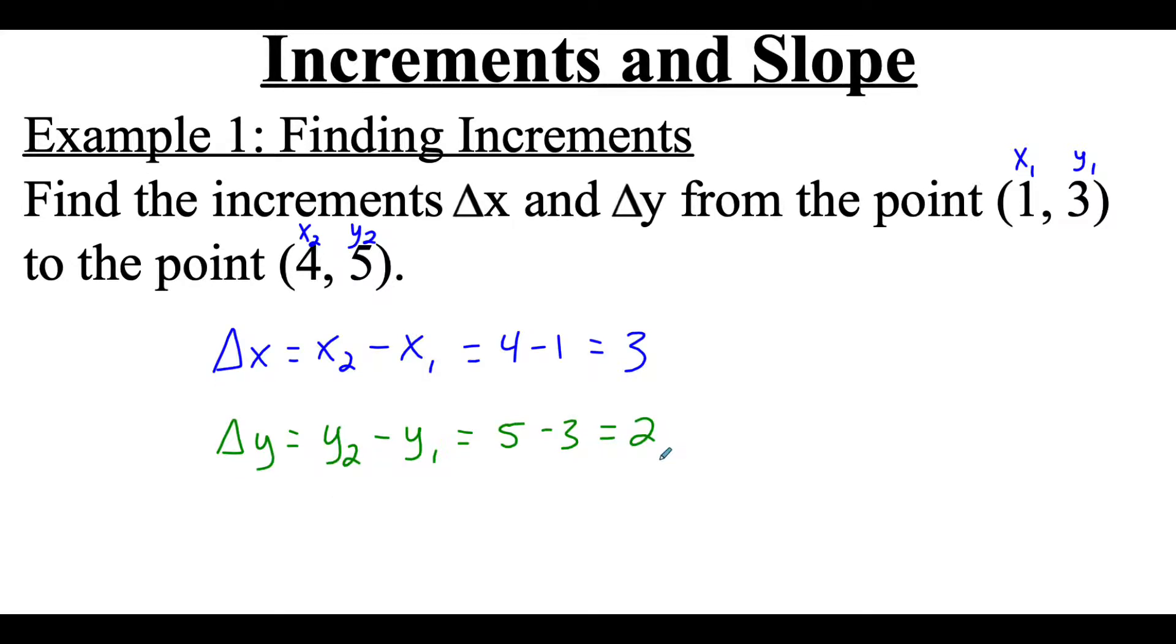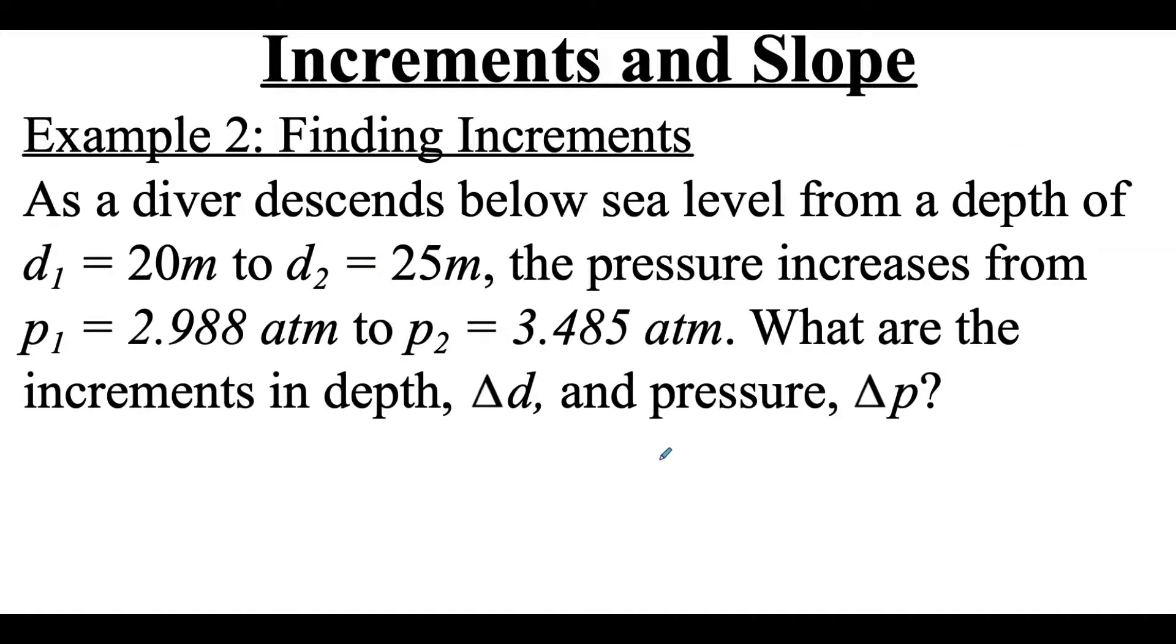In this example we've got a diver descending below sea level. He starts at a depth of 20 meters and he descends down to 25 meters below sea level. The pressure that he's feeling increases from 2.988 atmospheres up to 3.485 atmospheres, and we want to find those increments for the depth, Δd, and also the pressure, Δp.